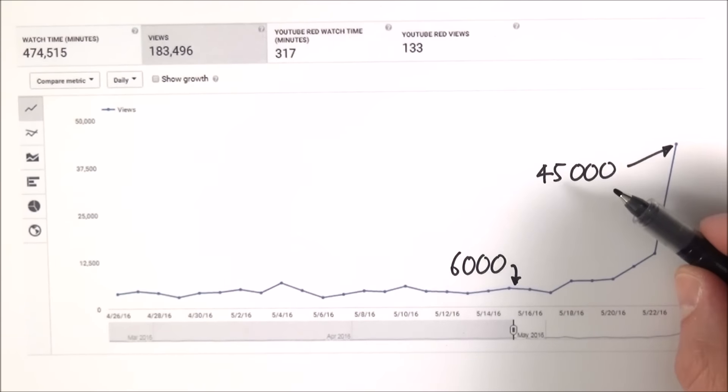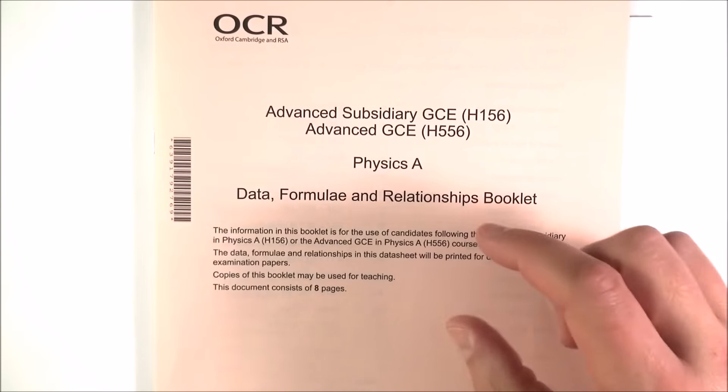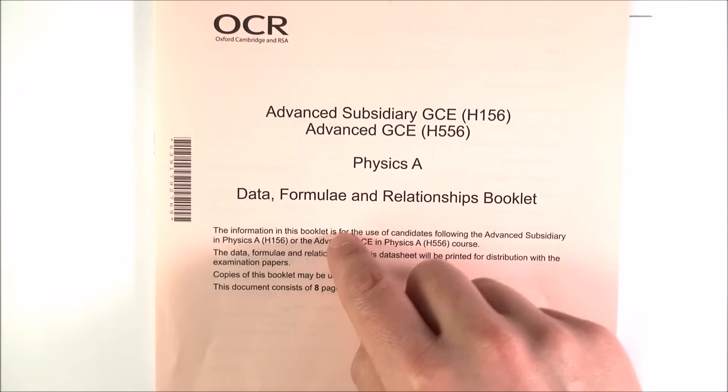Now something that I've seen a few people talking about on the student rooms was the data book. The one you should have is a pink one, this is for the new specification, but some people I think got the older yellow ones which talked about G481, G482 and so on.